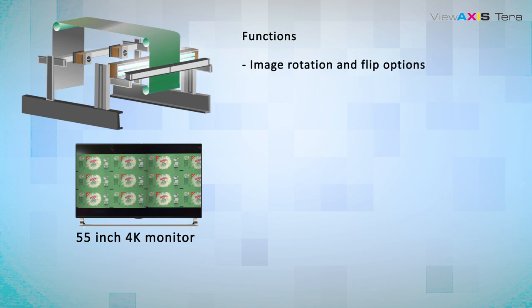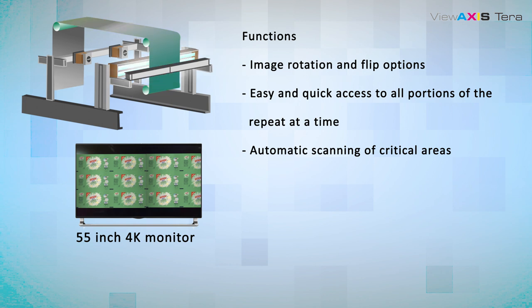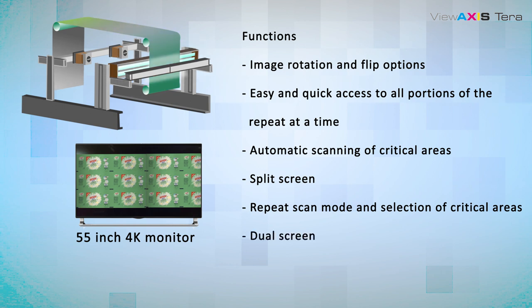The ViewAxis Terra can show the operator a stationary image of the entire width of the print web. This helps the operator spot print errors on the web and take corrective action immediately to reduce print material wastage.